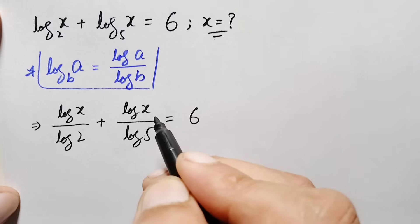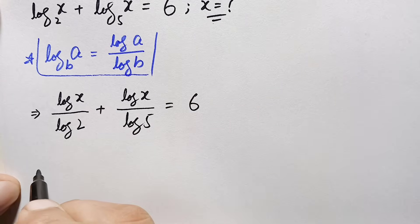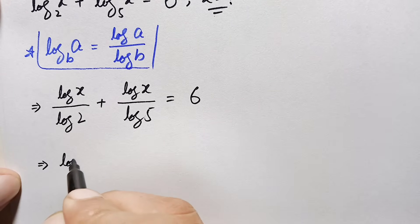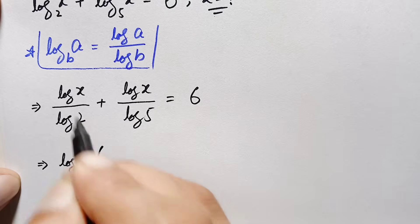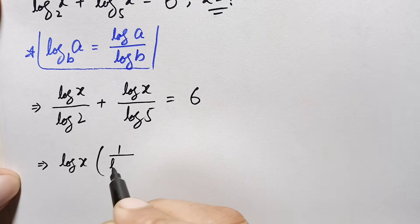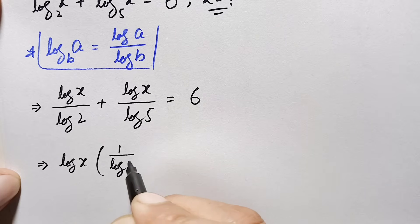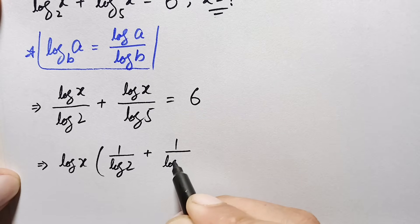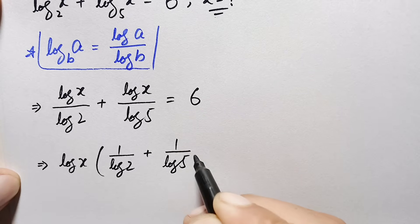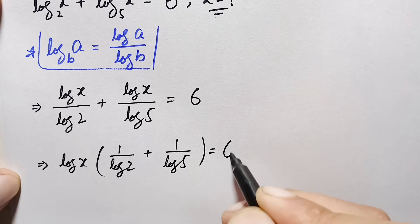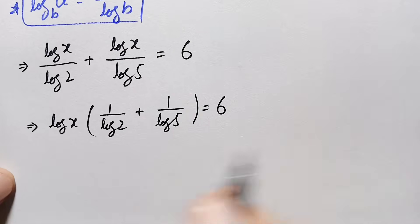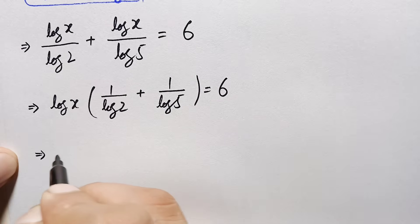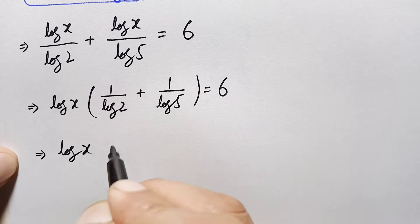There is log of x common in the numerator, so we will take it out. Taking log of x common, this becomes: log of x times (1 over log of 2 plus 1 over log of 5) is equal to 6.